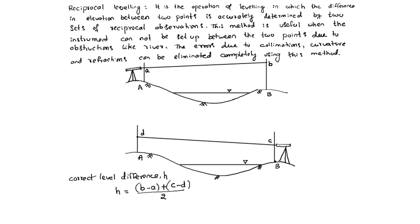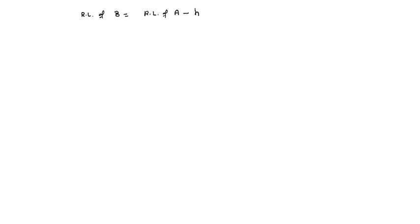So RL of B equals RL of A minus H, where H equals (b minus a) plus (c minus d) divided by 2. That is RL of B.